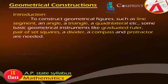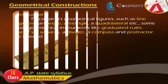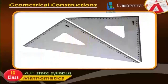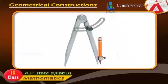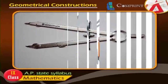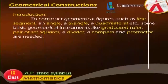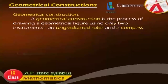Some basic geometrical instruments like a graduated ruler, pair of set squares, a divider, a compass, and protractor are needed. A geometrical construction is the process of drawing a geometrical figure using only two instruments: an ungraduated ruler and a compass.